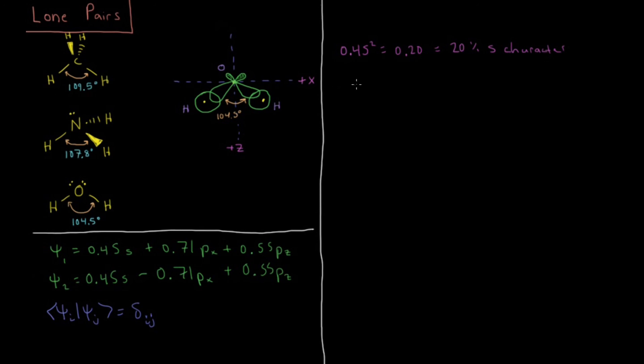And for the p, we have plus or minus 0.71 squared plus 0.55 squared equals, if you do that math, it comes out to be 0.8 equals 80% p character.